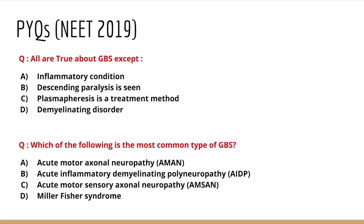Now answering the PYQ questions. Question 1: all are true about GBS except — inflammatory condition is true; descending paralysis is false because GBS causes ascending paralysis starting from the legs; plasmapheresis as a treatment method is correct; demyelinating disorder is also true. Therefore the answer is option B — descending paralysis is seen is the false statement. Question 2: the most common type of GBS among AMAN, AIDP, AMSAN, and Miller Fisher Syndrome is AIDP. This is a straightforward question.